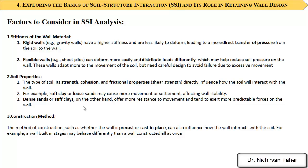There are several factors that affect soil-structure interaction. One is the stiffness of the material. Rigid walls like gravity walls and flexible walls like steel sheet piles behave differently. Gravity walls have higher stiffness and are less likely to deform, leading to a more direct transfer of pressure from the soil to the wall. Flexible walls like sheet pile walls can deform more easily due to their thin cross-section.